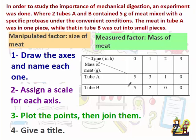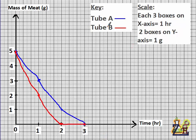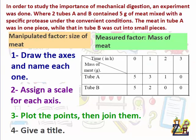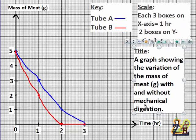For tube B in red: at 0 hours mass is 5, at 1 hour it becomes 2, at 2 hours it's 0, and at 3 hours it's 0. We join these points to form the curve for tube B. With both curves drawn and the key shown, the last step is to give a title: 'A graph showing the variation of the mass of meat with and without mechanical digestion' — we don't say 'with time' because the manipulated factor is the presence or absence of mechanical digestion.